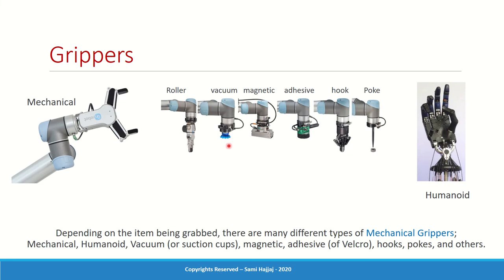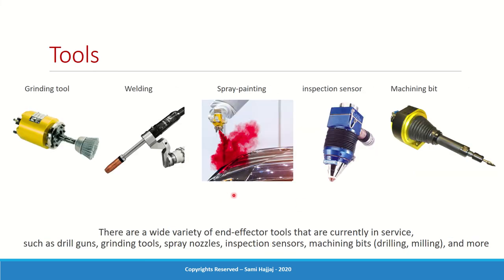The choice of gripper depends on the product. If the item is small and not heavy, use mechanical. If it's very light and a mechanical gripper could break it, use vacuum. If it's metallic and magnetic, use a magnetic gripper. If not, try adhesive, hooks, or velcro. Humanoid grippers are not really used in industry — they're used in social robotics, for robots interacting with humans, or for research into humanoid robotics.